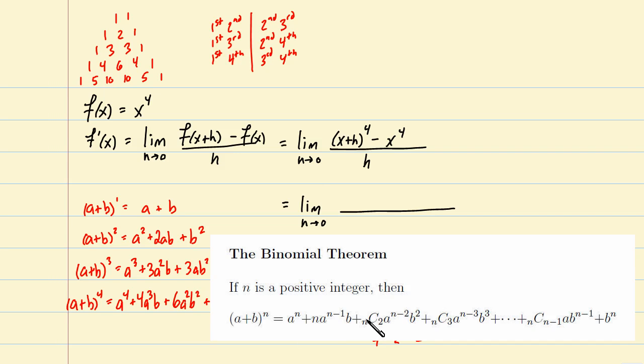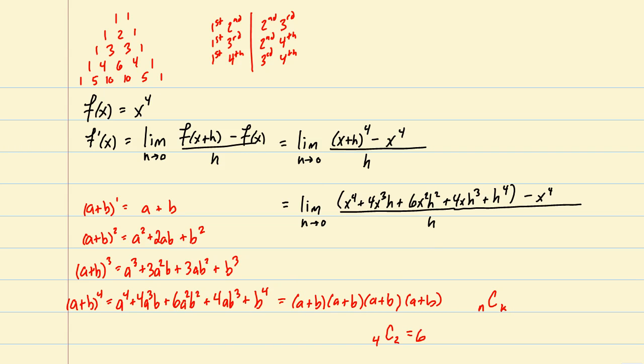Okay, so we can always use the binomial theorem to expand such things as (x+h) to the fourth, or (x+h) to any positive integer power. So in doing so, we would have x to the fourth plus 4x cubed times a single h, plus 6x squared h squared, plus 4xh cubed, and finally plus h to the fourth. Remember, that's just this piece. Minus x to the fourth, and then all of that is over h.